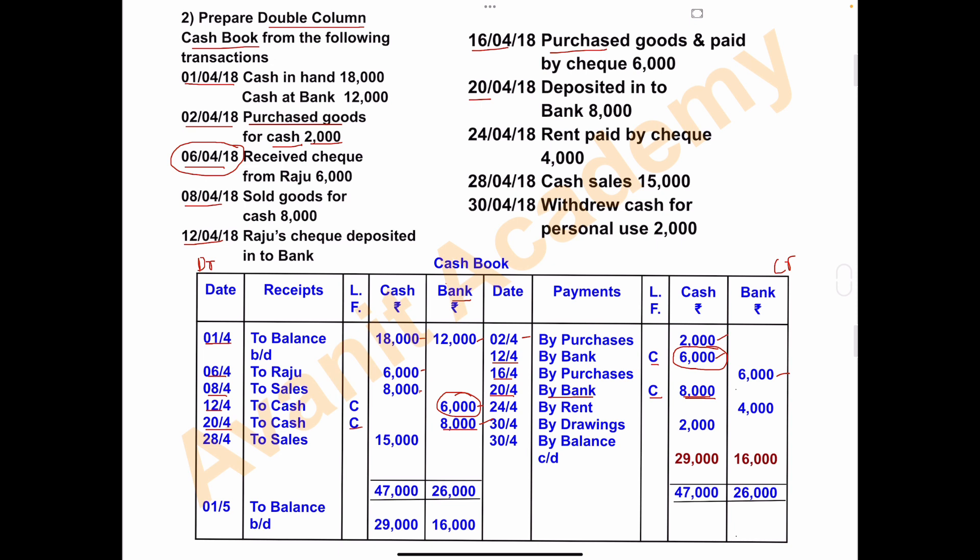On 24th April, rent was paid by check rupees 4,000. Rent is an expense of the business. On the payment side, write 24th April, 'by rent'. Since rent is paid by check, record rupees 4,000 in the bank column only.